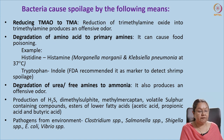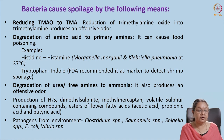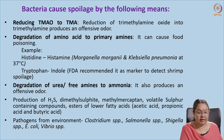Tryptophan is converted to indole, which is an indicator of spoilage in shrimp. Degradation of urea and free amines to ammonia also produces odor. Production of H2S, dimethyl sulfide, methyl mercaptan, volatile sulfur-containing compounds, and esters of lower fatty acids like acetic acid, propionic acid, and butyric acid are also produced due to microbial action. From the environment, fish may get contaminated with Salmonella, Shigella, Vibrio, E. coli, and Clostridium.